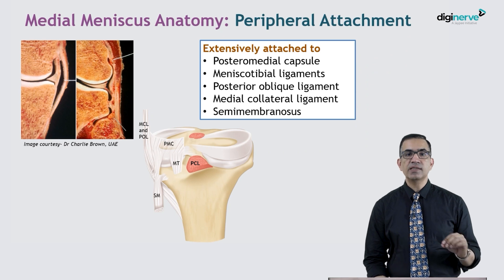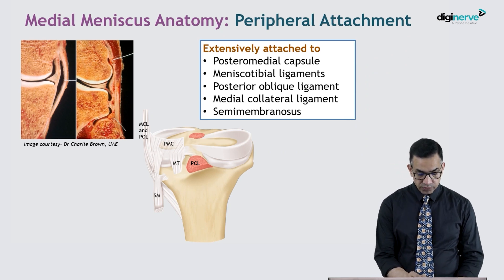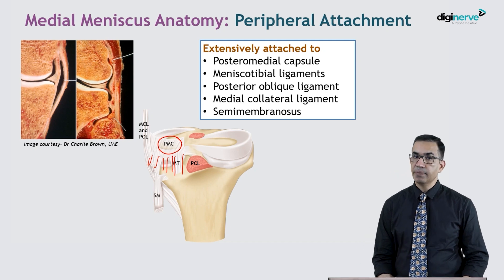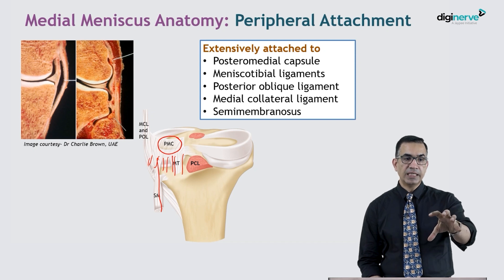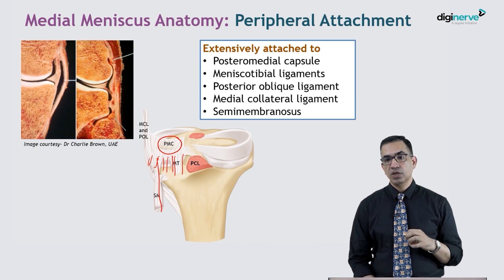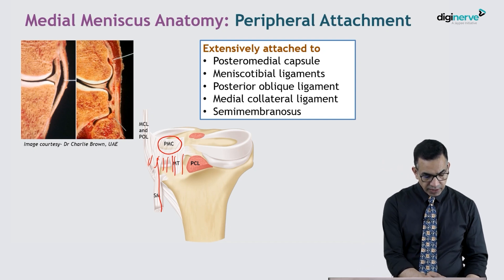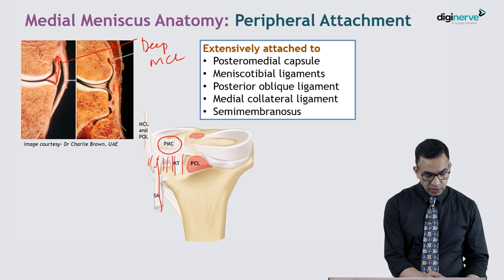The medial meniscus is very extensively attached to the tibia with the help of the posteromedial capsule, meniscotibial ligaments, posterior oblique ligaments, medial collateral ligament, and semimembranosus. Semimembranosus is a dynamic structure which, in flexion, pulls the meniscus backwards to prevent further injury. In this figure you can see the medial meniscus, the meniscofemoral ligaments — also known as the deep MCL — and the meniscotibial ligaments.